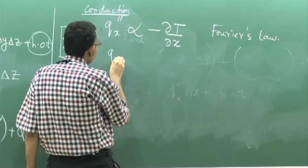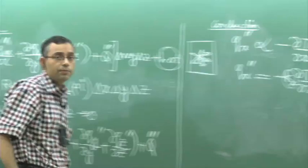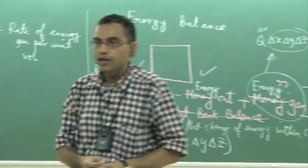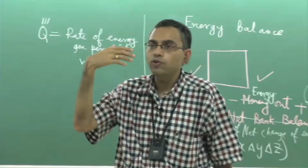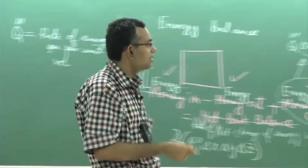The constant of proportionality is replaced by an equality introducing the thermal conductivity of the material. We give it a subscript x because thermal conductivity can vary with direction. For anisotropic materials, k_x, k_y, and k_z are all different. But most of the time we deal with materials where k_x, k_y, k_z are all the same constant k.